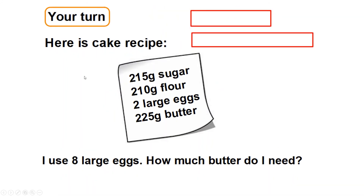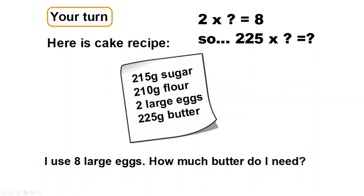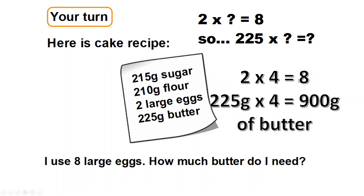Have a go at this one — here is a cake recipe. I use 8 large eggs — how much butter do I need? What do I need to times the eggs by to make it eight, and then I times the butter by the same number. Two times something equals eight — that's four. So 225 grams times four equals 900 grams of butter. Two, four, six, eight — so 800 plus 100 equals 900 grams of butter.